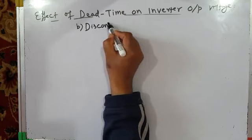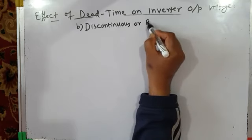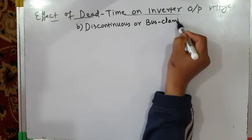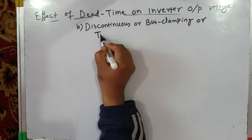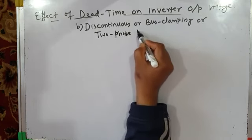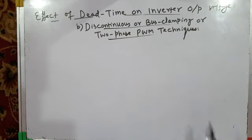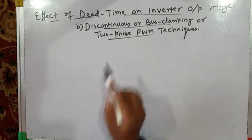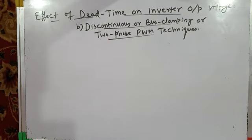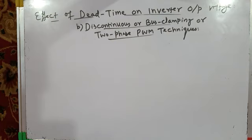These are called Discontinuous or Bus Clamping PWM techniques, also known as Two-Phase PWM techniques. They are called Two-Phase PWM techniques because one of the phase legs is clamped to either the positive DC bus or negative DC bus, and at any given instant, two phases will be switching while one phase will be clamped to the DC bus.